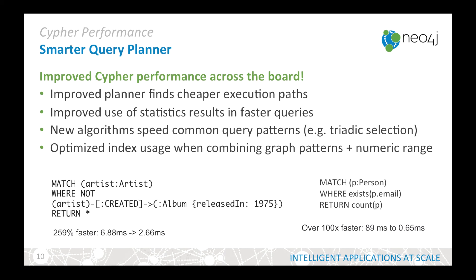We've also improved the performance of Cypher with a smarter query planner. This improved planner finds cheaper execution paths and uses statistics to result in faster queries. The new planner also has new algorithms which speed very common query patterns such as triadic selection, and we've also added indexes for numeric range queries.